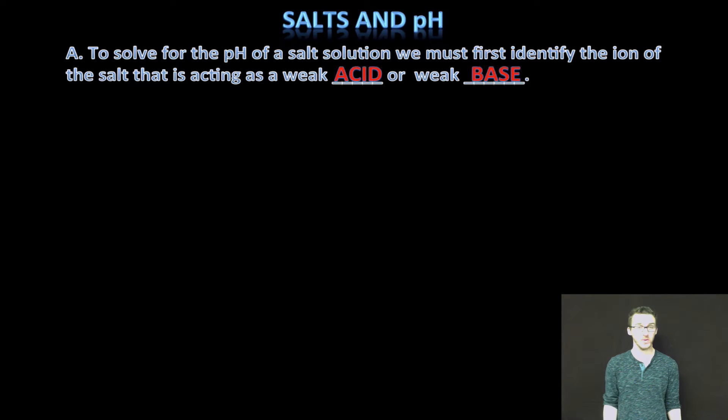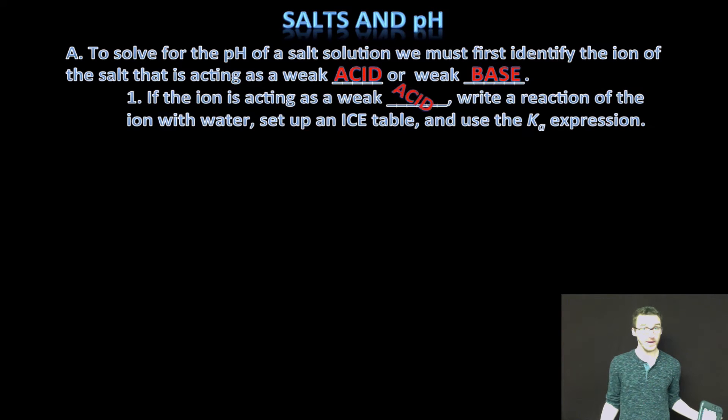Keep in mind the following five things. One, if the ion is acting as a weak acid, just write the reaction of that ion with water, set up an ICE table and use the Ka expression. If the ion is acting as a weak base, write the reaction of the ion with water, set up an ICE table and use the Kb expression.